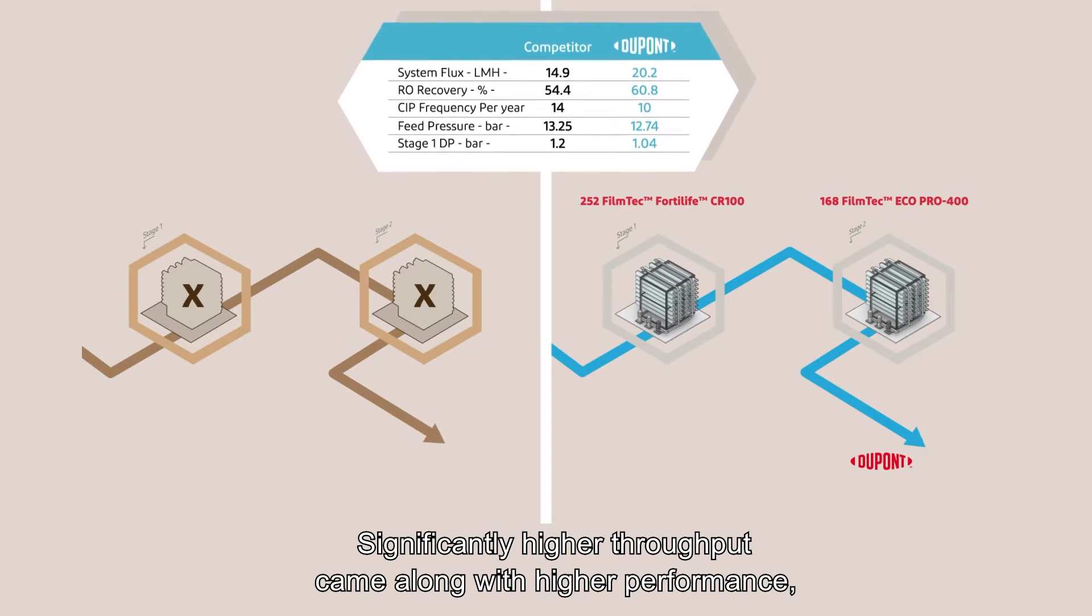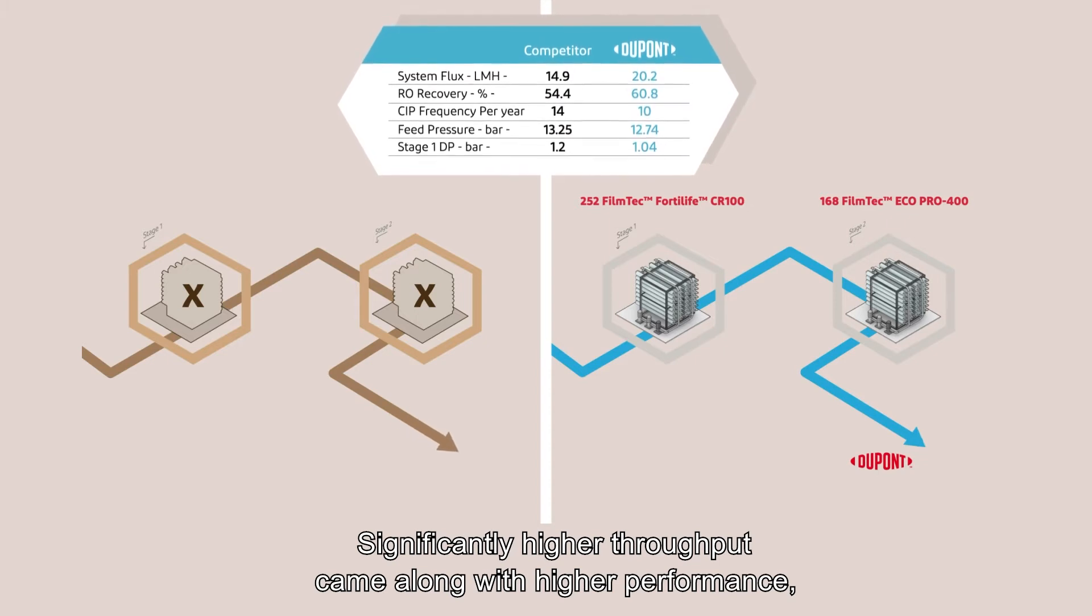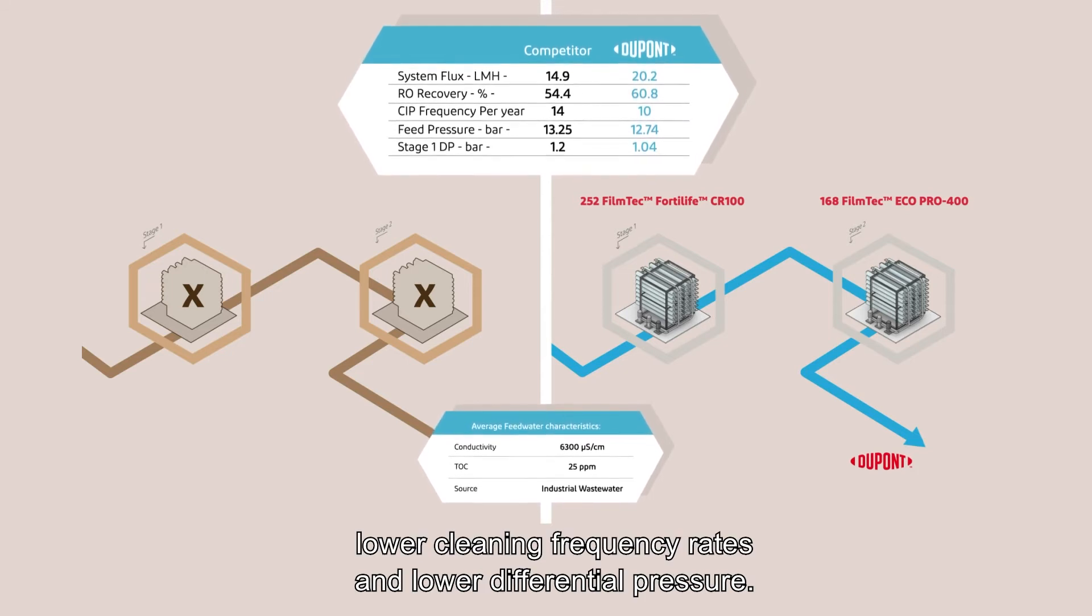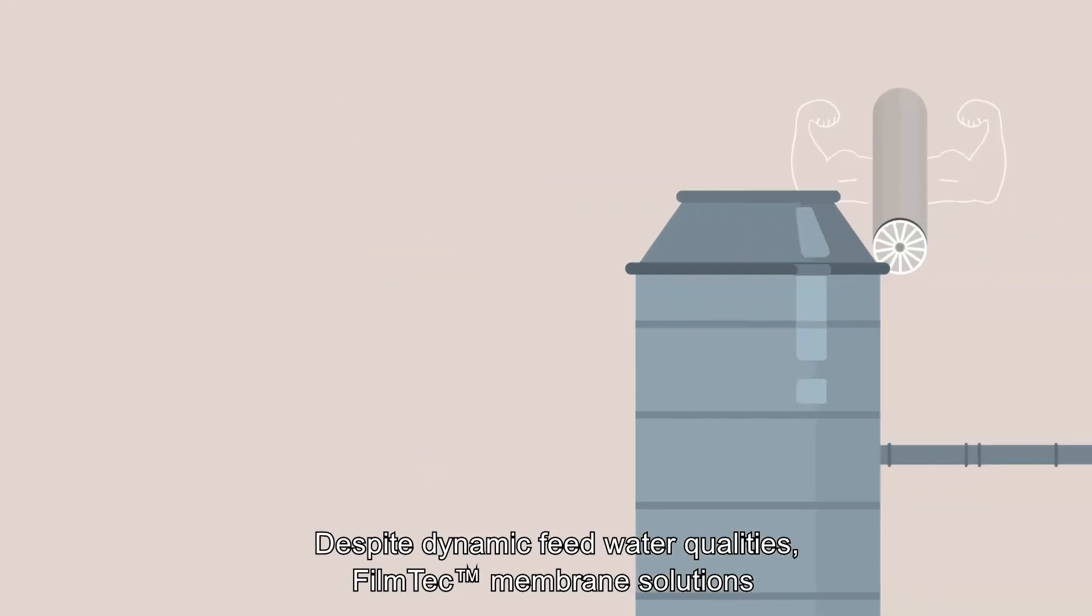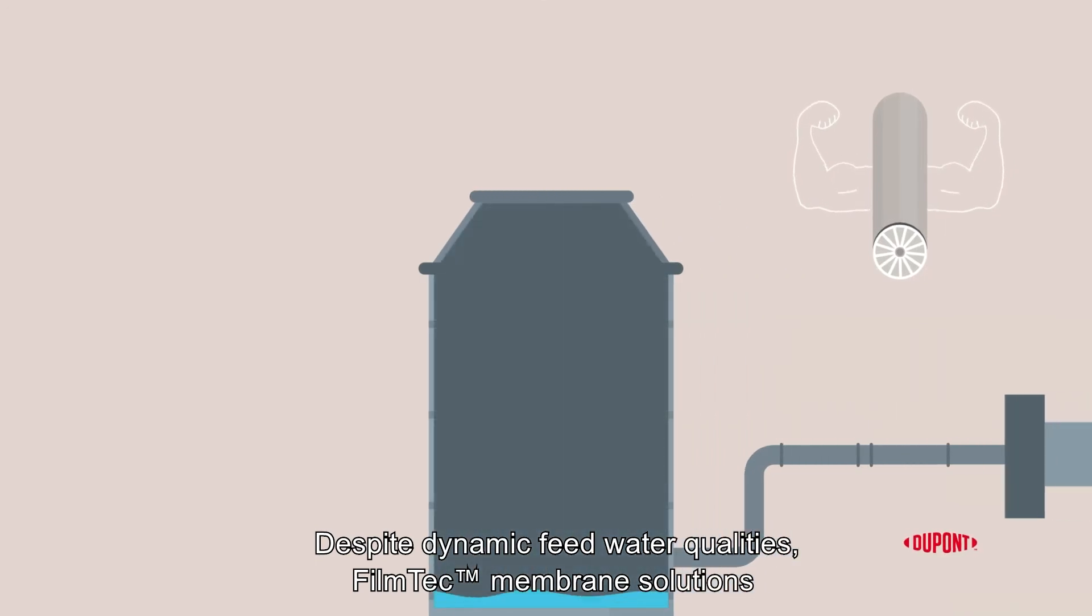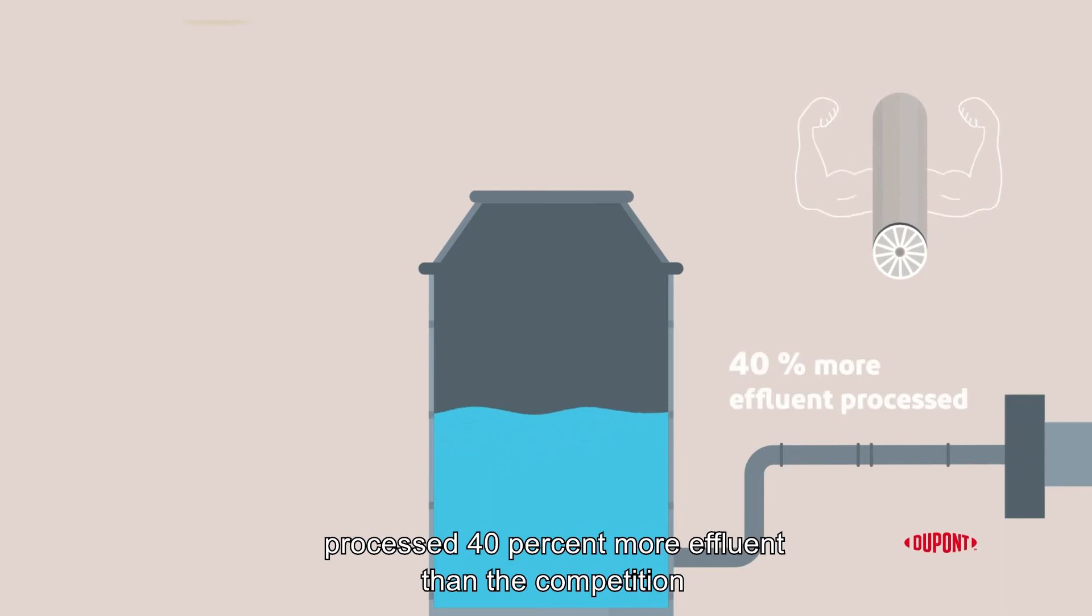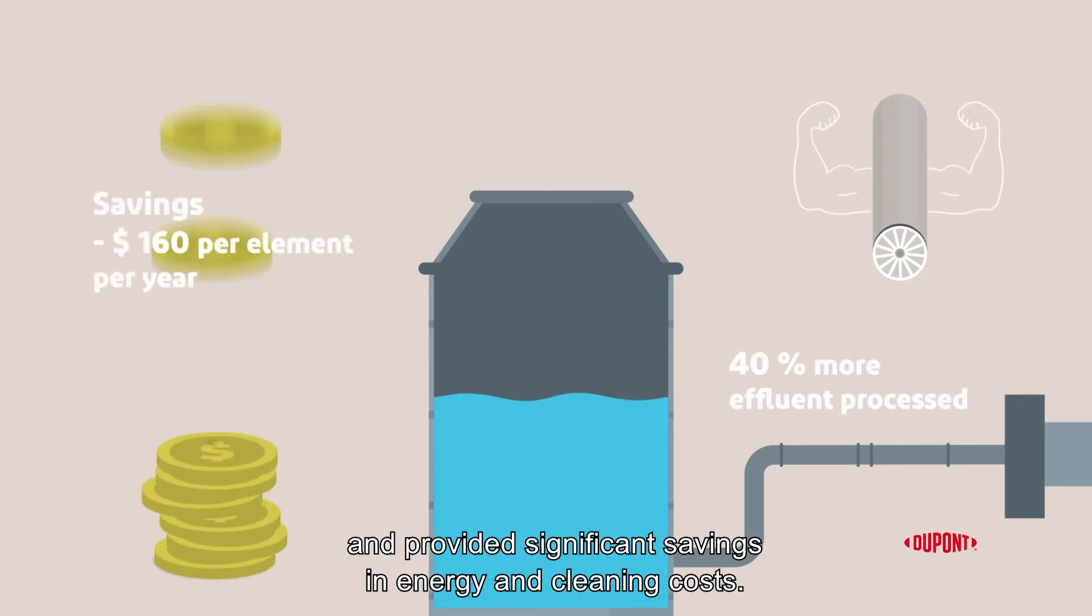Significantly higher throughputs came along with higher performance, particularly in recovery rates, lower cleaning frequency rates, and lower differential pressure. Despite dynamic feedwater qualities, Filmtek membrane solutions processed 40% more effluent than the competition and provided significant savings in energy and cleaning costs.